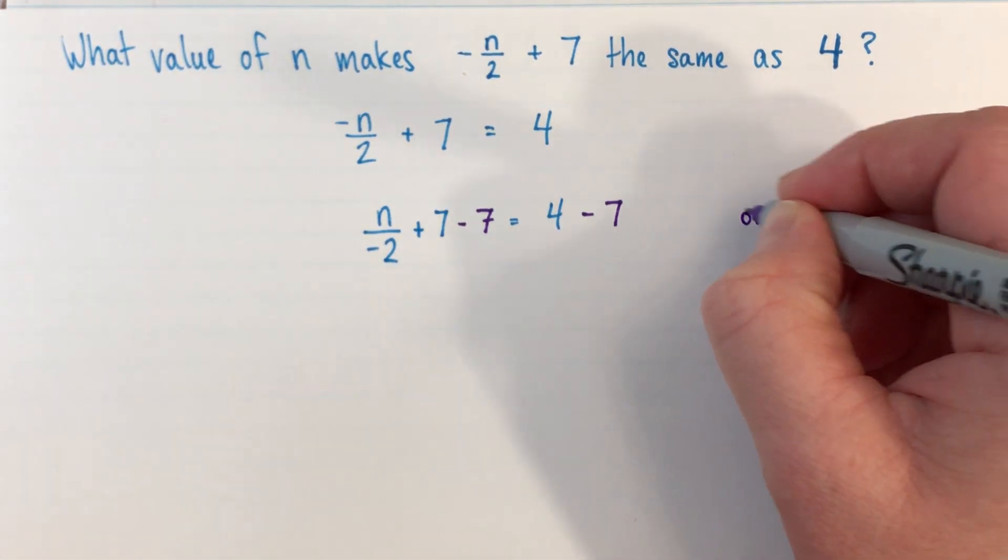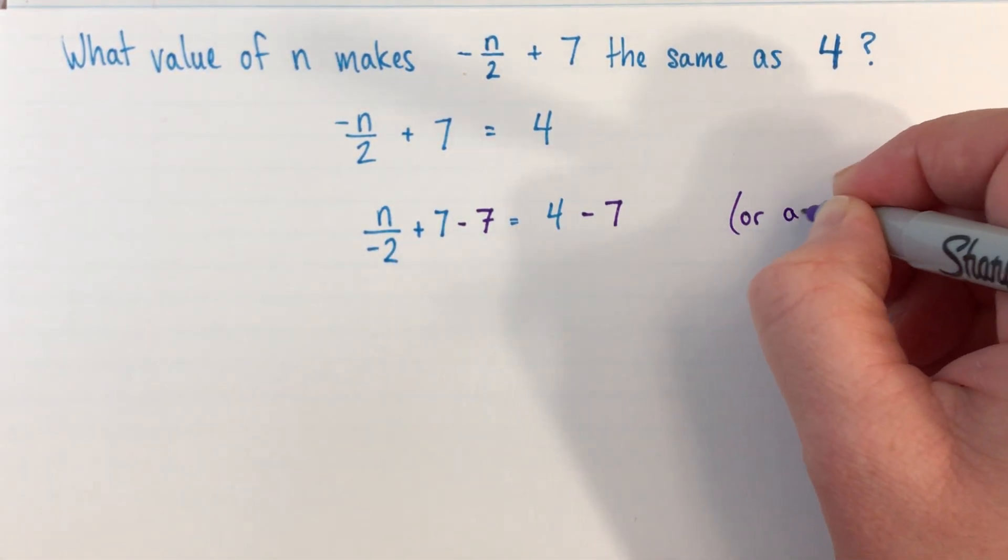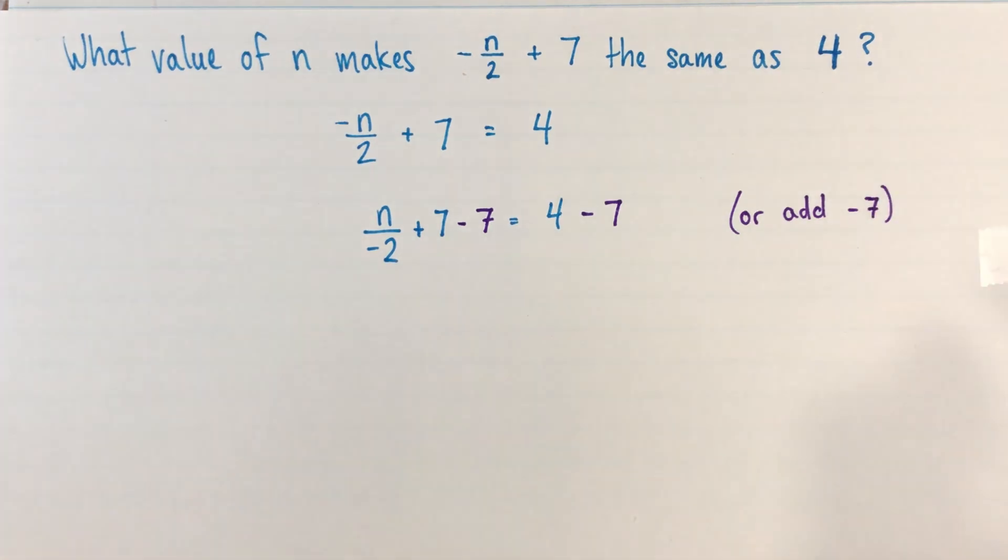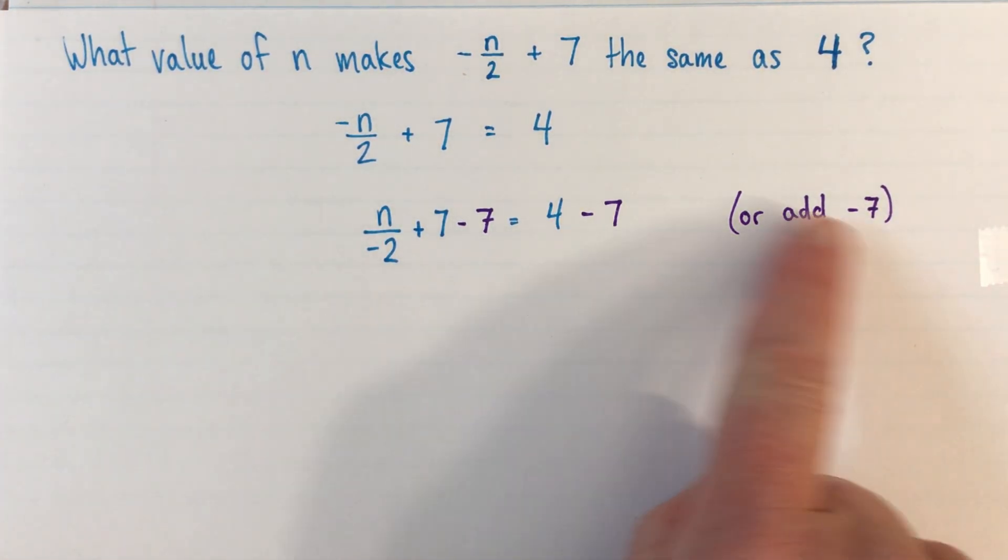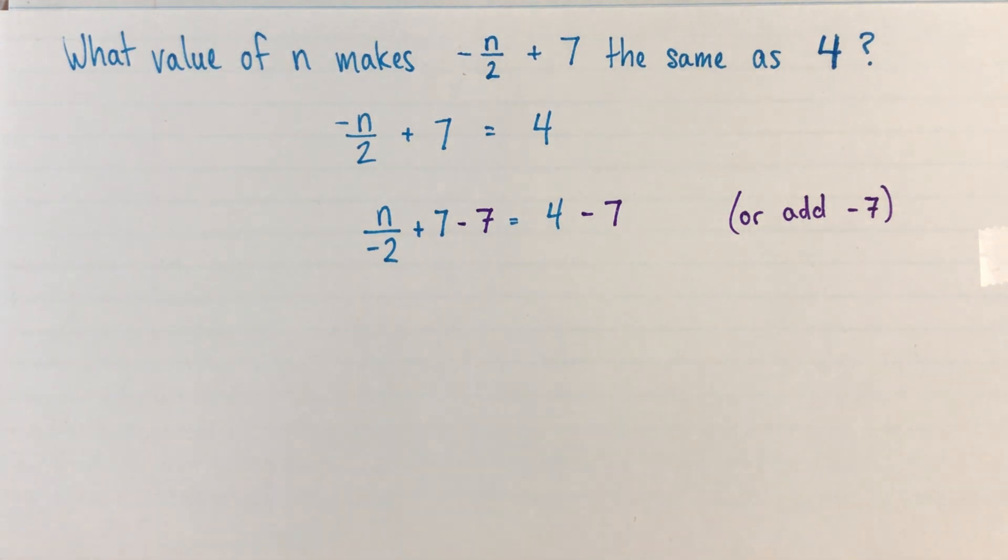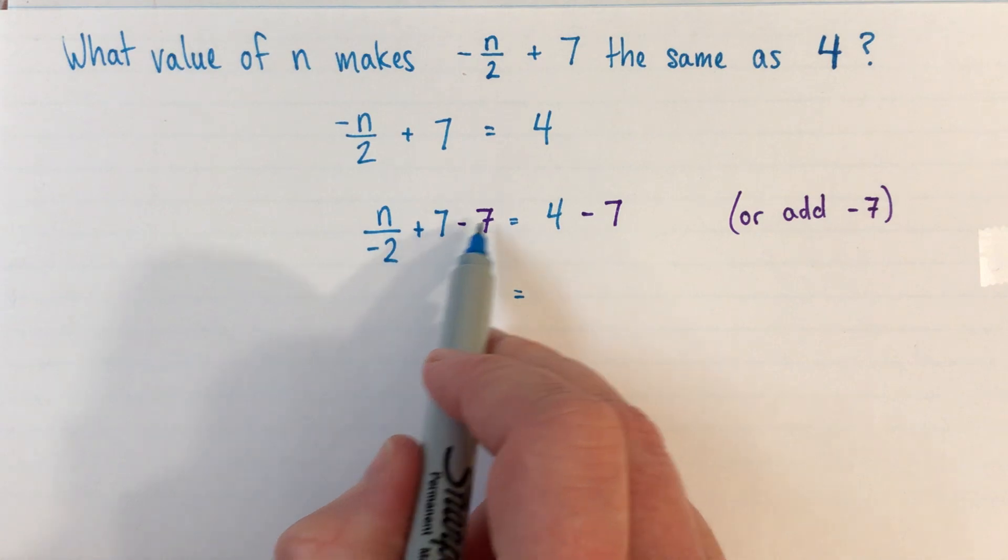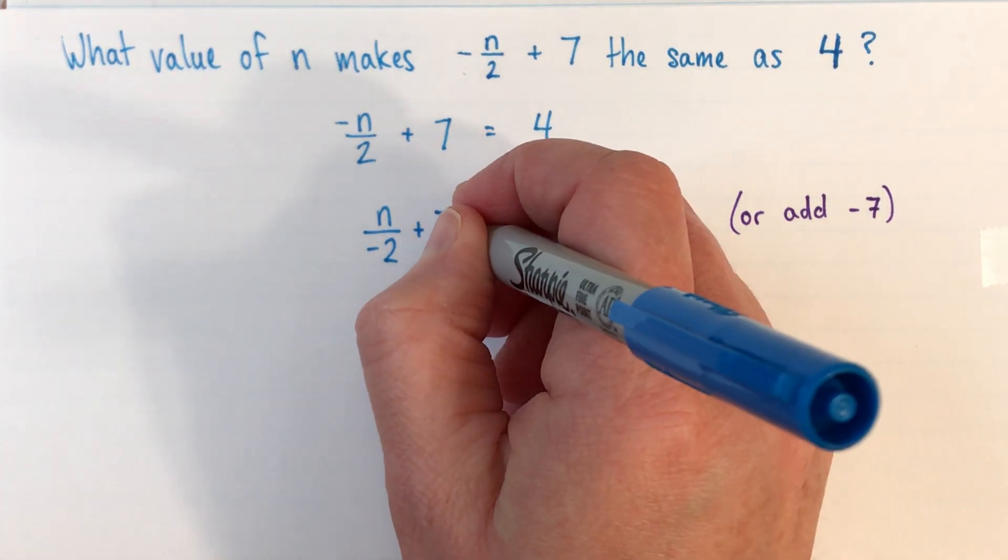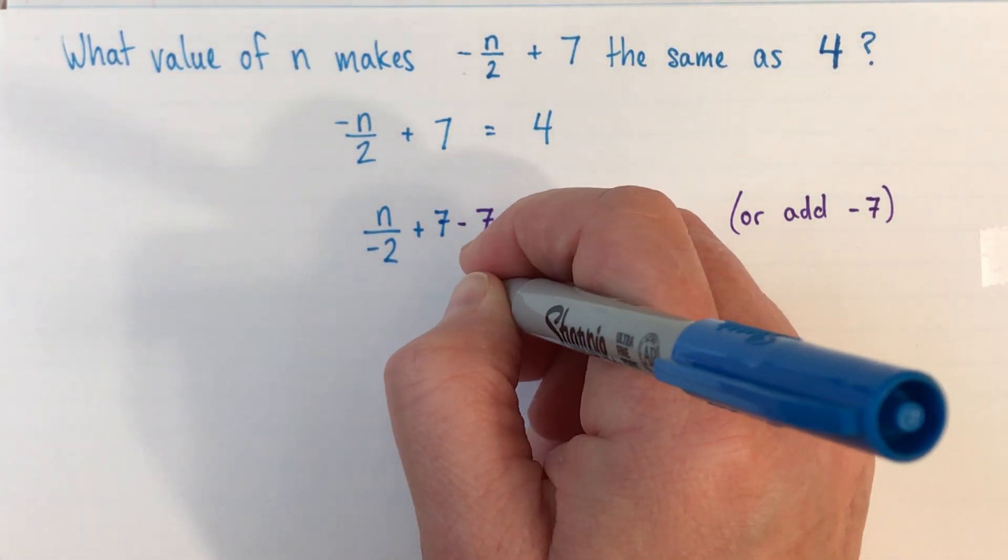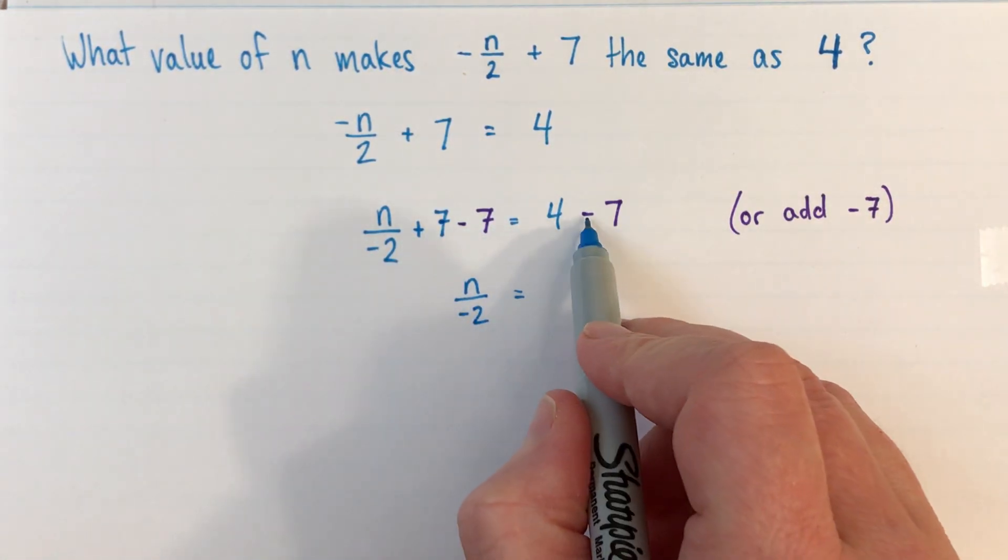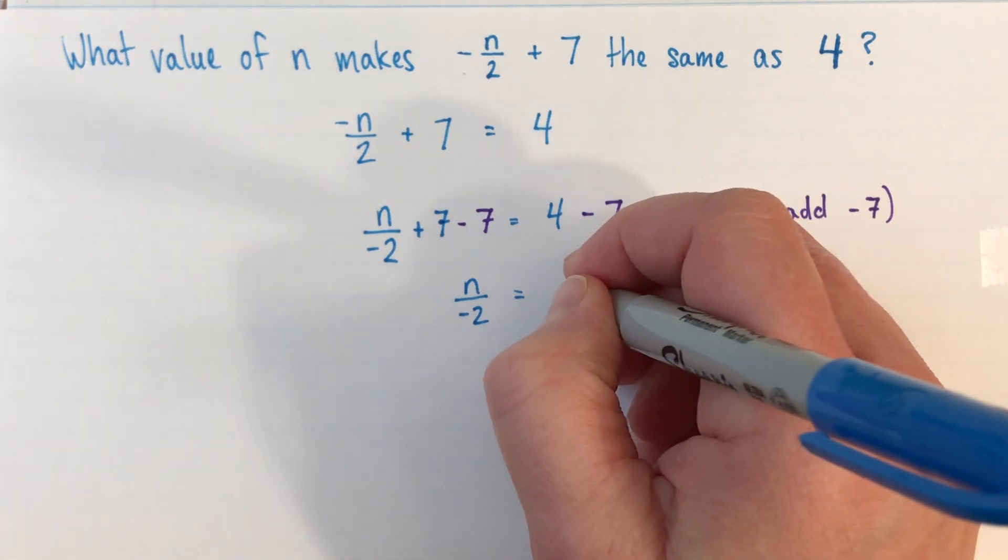We'll make a little note here. Another way, especially if you're imagining algebra tiles, you might want to be thinking of that as adding -7. And feel free to write adding -7. They mean exactly the same thing. So on this side, this whole part here is 0. 7 - 7 is 0. So we've got n/(-2). And 4 - 7 is -3.